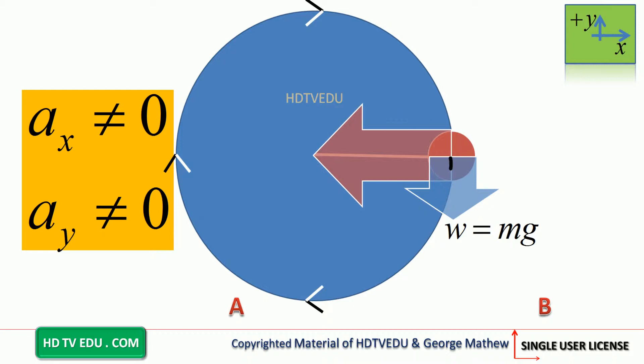Gravitational force acts vertically down. Tension acts horizontally to the left — it is to the center. So, what is the only force along the horizontal? Tension. And what is the direction of tension? To the center. What is the net force towards the center?